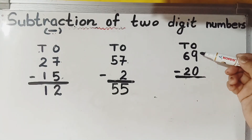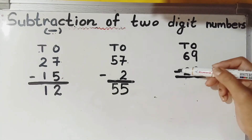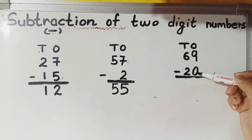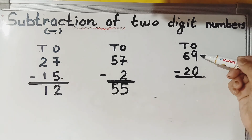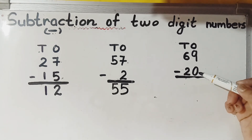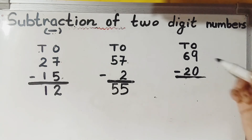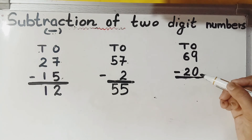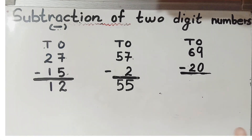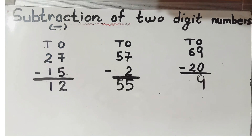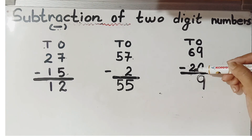Now let's try the next example. We subtract the ones first — nine minus zero at the ones place. Zero means nothing, so if we subtract zero from nine, we are not subtracting anything. Keep nine in your mind and open zero fingers — zero fingers means you don't open any fingers. So nine minus zero is nine.